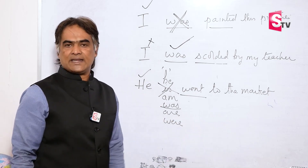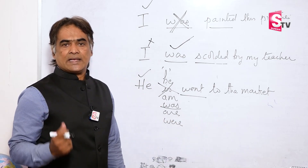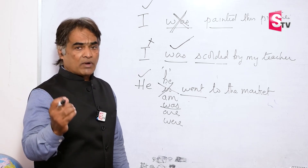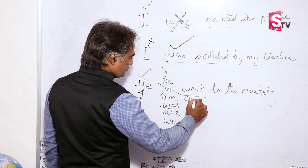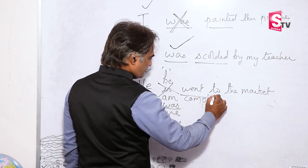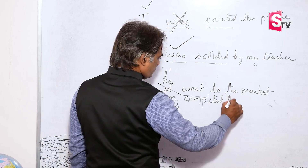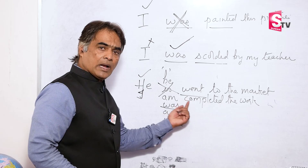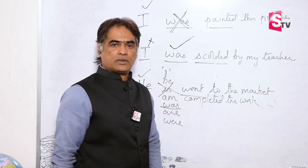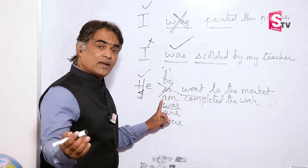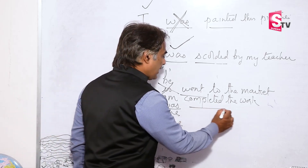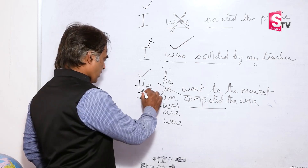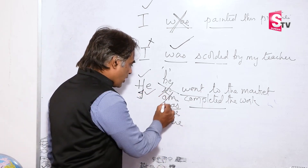To further consolidate and strengthen your understanding, one more example: 'I am completed the work.' Apart from the B form of verb, the other verb is 'completed.' Who did it? I did it. When I did it, 'am' is not required.